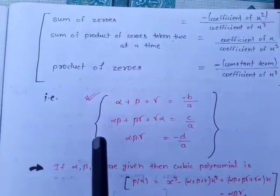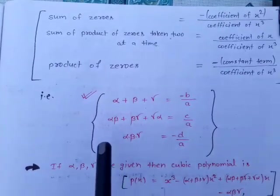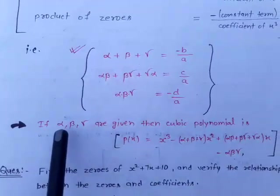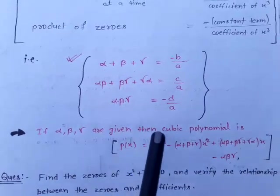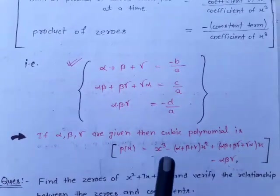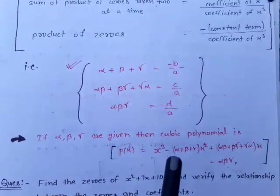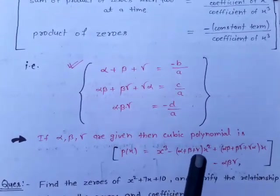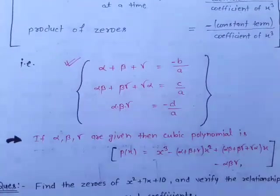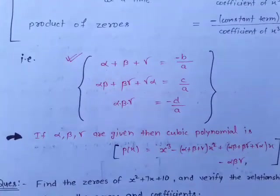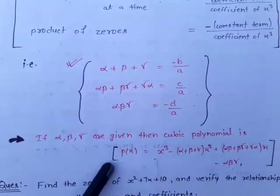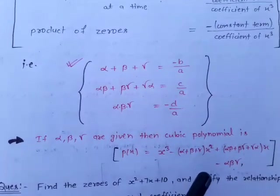Note for cubic polynomial formation: if alpha, beta, gamma are the zeros of the cubic polynomial, then p(x) = x³ – (alpha + beta + gamma)x² + (alpha·beta + beta·gamma + gamma·alpha)x – alpha·beta·gamma. This is the pattern for cubic polynomial formation when zeros are given.